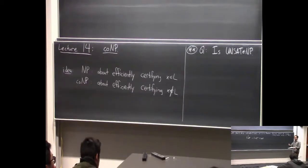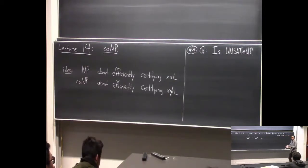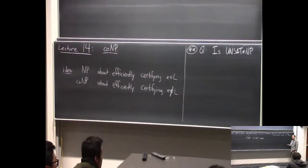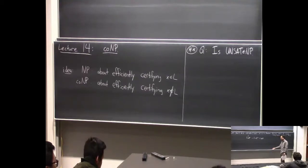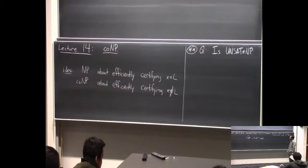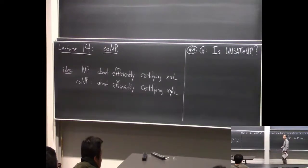We have to imagine how a prover might convince a verifier that a given Boolean formula does not have a satisfying assignment. If you're trying to convince somebody that a formula has a satisfying assignment, you can just tell them the assignment and the verifier can check it. But how can you convince somebody that there's no satisfying assignment? You could tell them some assignments and say these ones don't satisfy it. But you'd have to somehow know that no truth assignment satisfies the formula, and it's not clear how even a wise person could help, even if they gave you some kind of certificate.